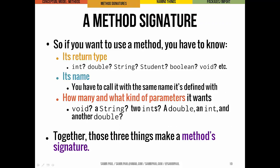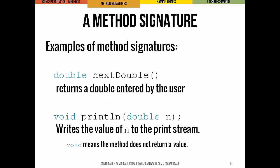To use a method, there are three things we need to know. First, what its return type is, so we can use it appropriately. Second, what the method is called, because we have to call it with the same name it's defined with. Third, what kind of parameters it actually wants — the order, the number, and the types all matter. If it wants a string, give it a string; if it wants two ints, give it that; if it wants a double, then an int, then another double — that exact order matters. Those three things together are what we call a method's signature.